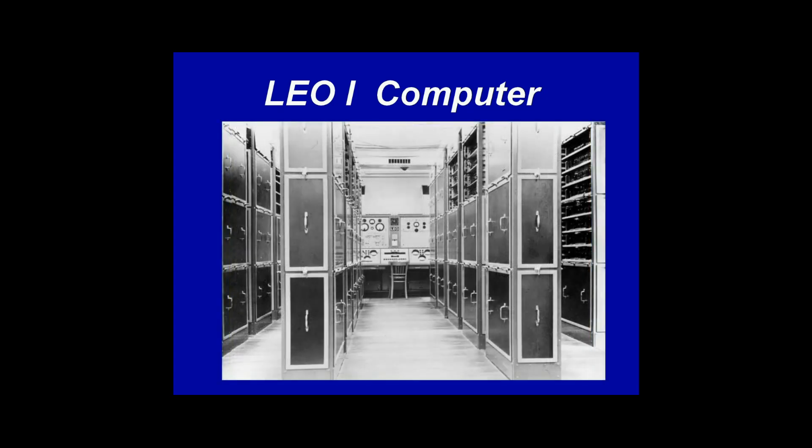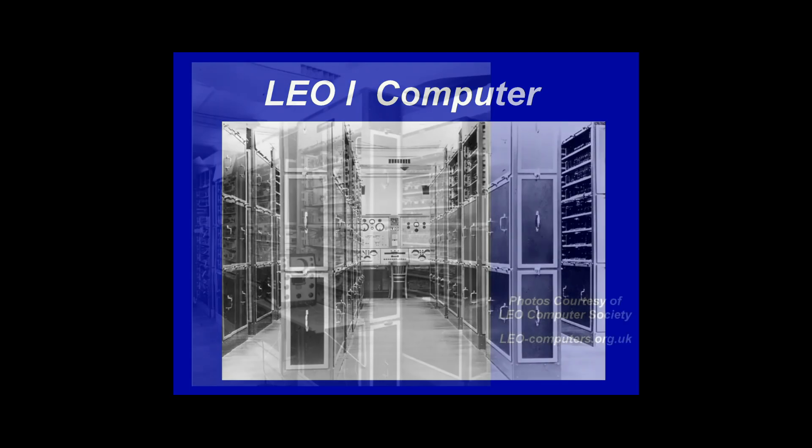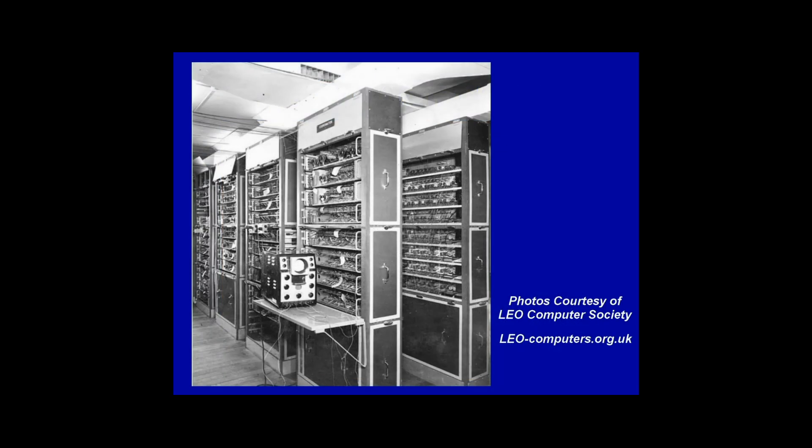LEO uses 5,936 tubes — or valves, as they are known in the UK — plus another 400 in peripheral equipment. It used 64 mercury tubes for storage. Each memory tube was over 5 feet long and weighed over 1,000 pounds. Oscilloscopes were used to monitor the contents of memory storage.